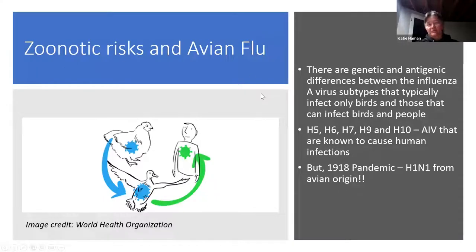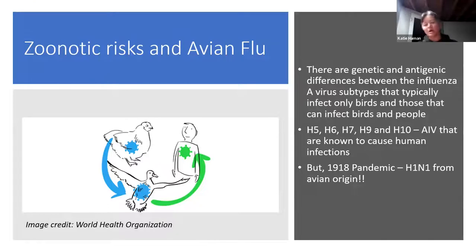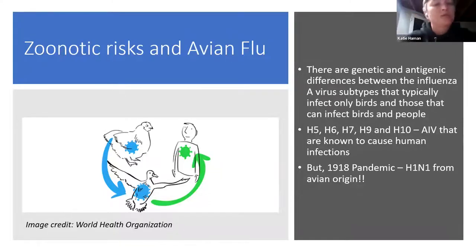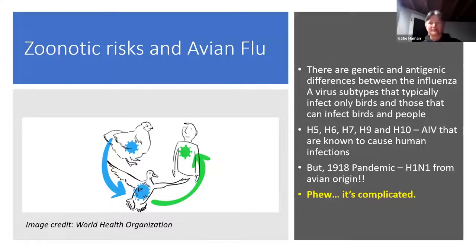I want to highlight the zoonotic risks of avian flu. Typically the risks are not that great — we tend to think most bird flu strains stay in birds and most human strains stay in humans. While influenza A virus from birds can infect humans, not all bird flu varieties infect humans. But it's really important to note that the 1918 pandemic H1N1 was from an avian source — they did a bunch of genetic work and traced it back to an avian origin.